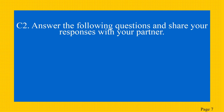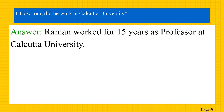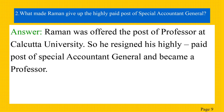C2 is in your textbook, page number 21. Answer the following questions and share your responses with your partner. How long did he work at Calcutta University? The answer is: Raman worked for 15 years as professor at Calcutta University. What made Raman give up the highly paid post of special accountant general? The answer is: Raman was offered the post of professor at Calcutta University, so he resigned his highly paid post of special accountant general and became a professor.